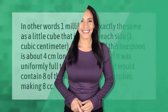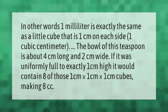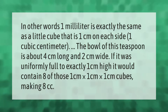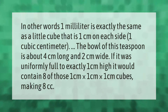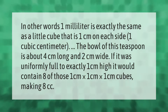One milliliter is exactly the same as a little cube that is one centimeter on each side — one cubic centimeter. The bowl of a teaspoon is about four centimeters long and two centimeters wide. If it was uniformly full to exactly one centimeter high, it would contain eight of those one centimeter by one centimeter by one centimeter cubes, making eight cubic centimeters.